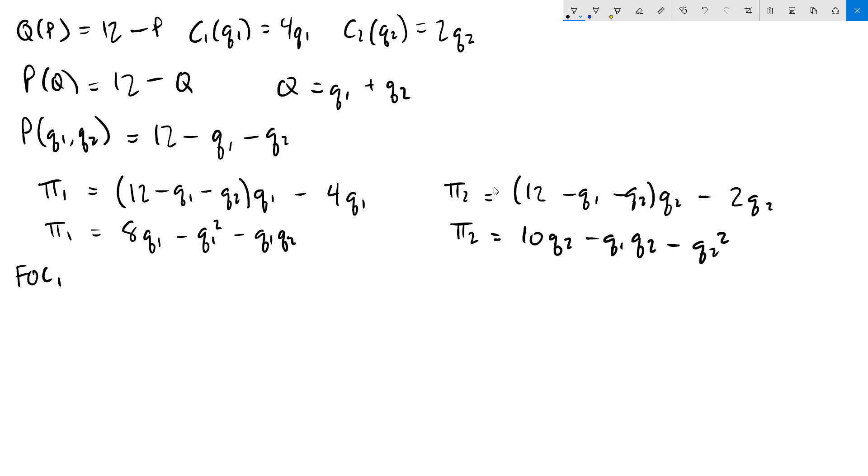Firm 1's first order condition, we take the partial derivative of pi1 with respect to q1. Since q1 is the variable that firm 1 is actually able to control, that gives us 8 minus 2q1 minus q2, and we set it equal to 0. Over here for firm 2, we take the partial of pi2 with respect to q2, which is 10 minus q1 minus 2q2 equals 0.